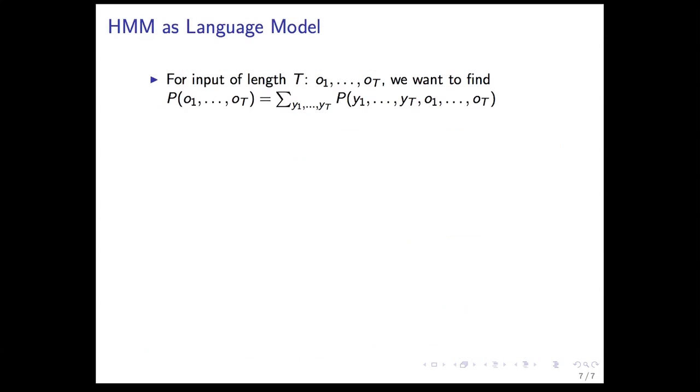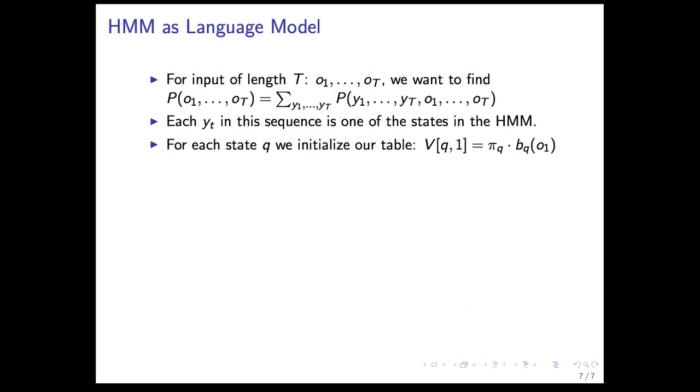For an input of length T, we want to find the probability of the observation sequence, the so-called language model probability. We do that by summing out all of the different states. Each Y sub T is one of the states.